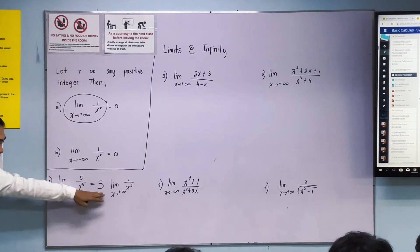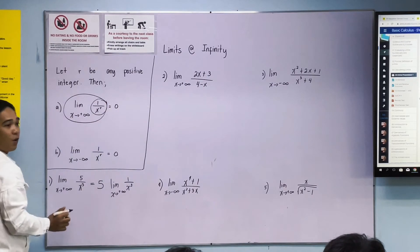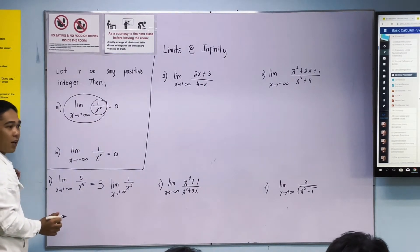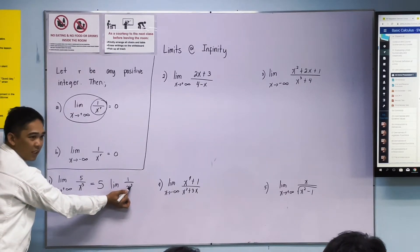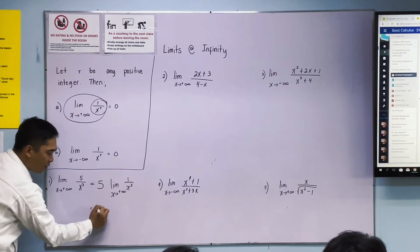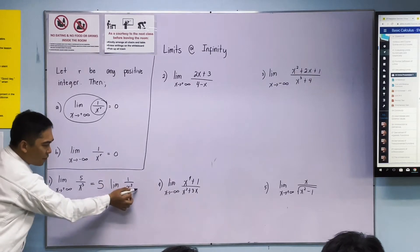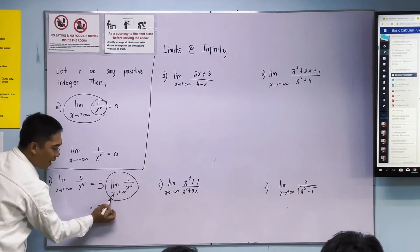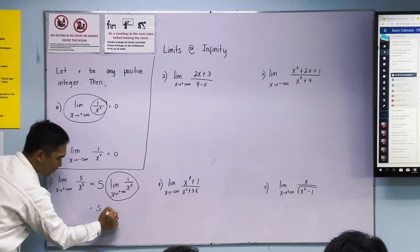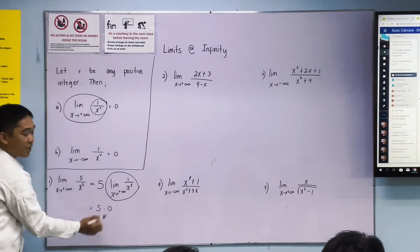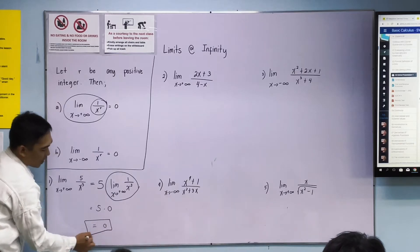Following the constant multiple rule, because our goal is to get it in this form: 1 over x raised to r. This is it: 1 over x raised to 3. Now we have 5 times limit of 1 over x cubed as x approaches positive infinity. This is it. Now 5 times 0 equals 0. That's our answer.